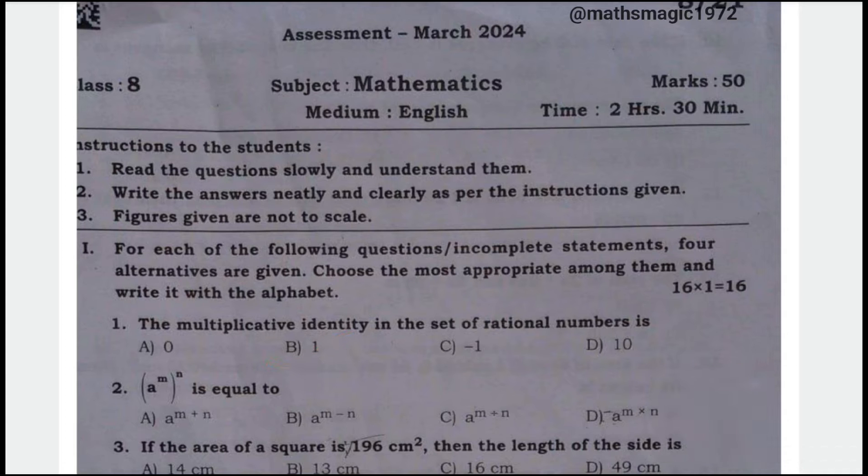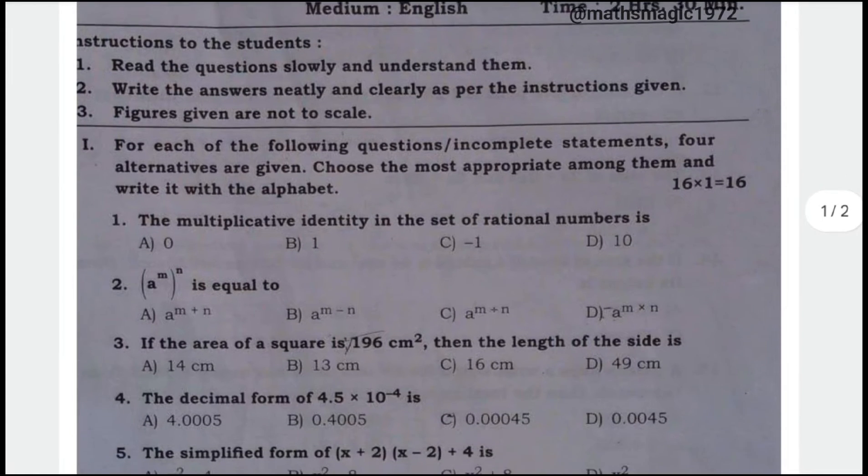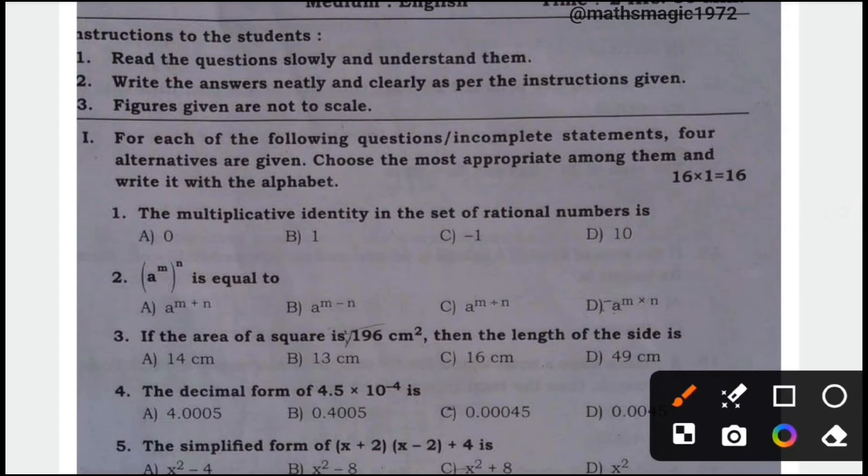Next, a to the power of m times a to the power of n is equal to option D, a to the power of m into n is the correct answer.